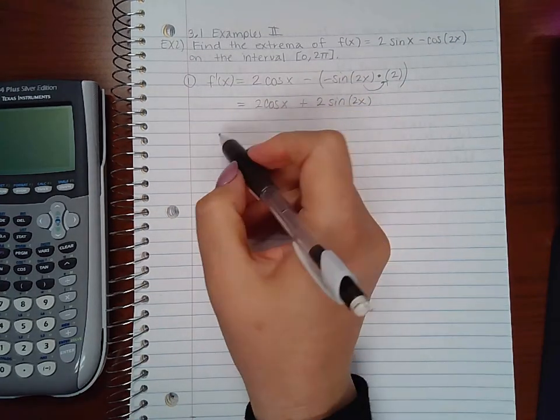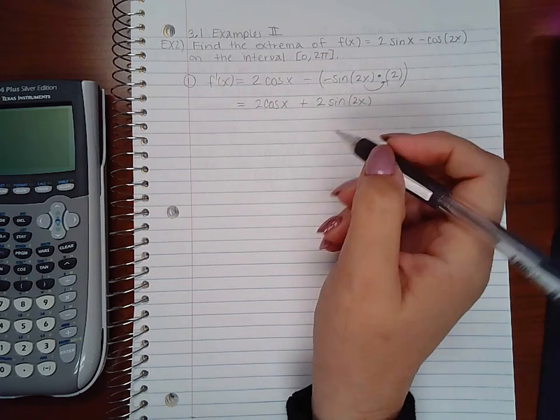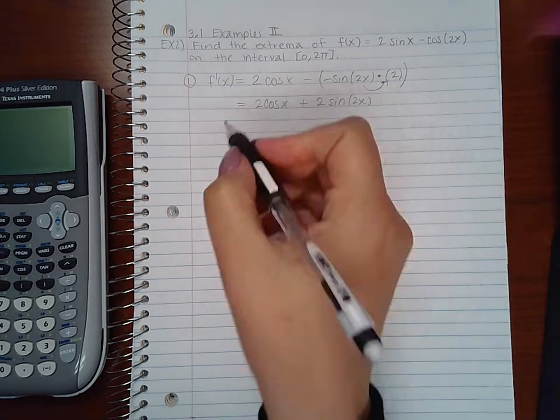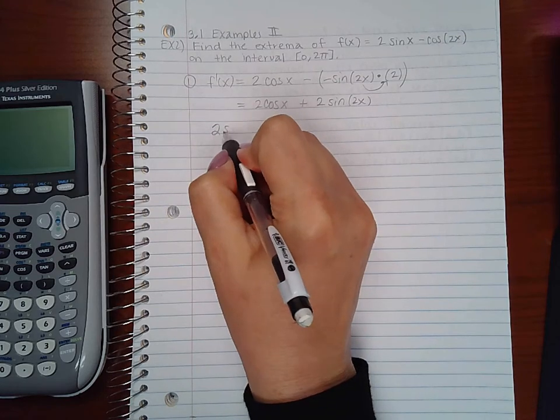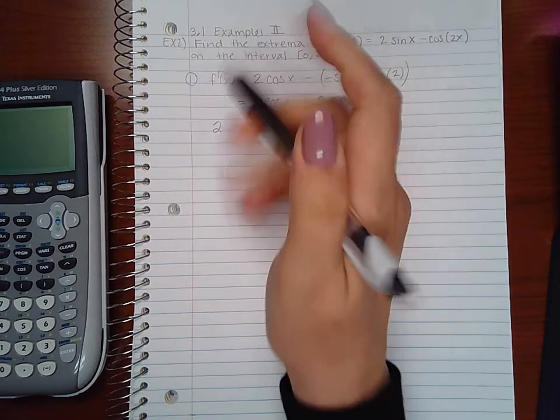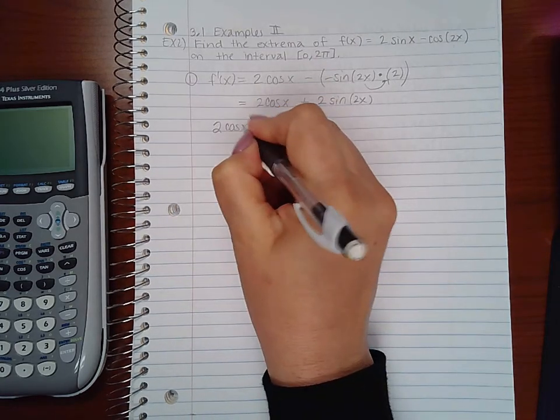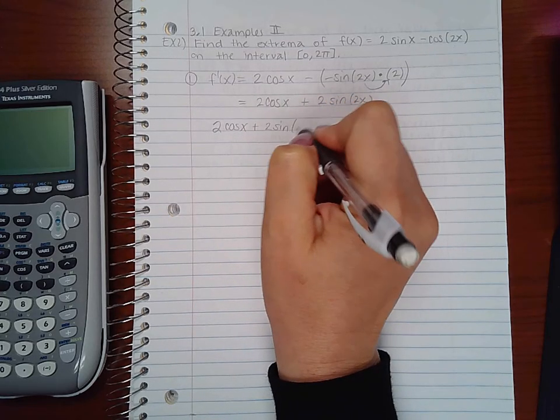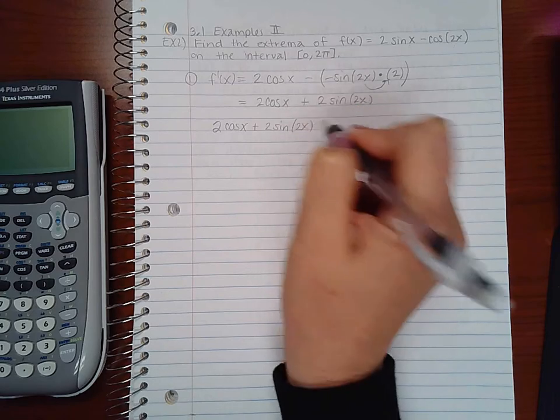Now I do have to set this equal to 0. I do not need to find where it's undefined because there is no denominator. So I am going to end up setting this function equal to 0 and normally the best way to do that is to try to factor the equation.